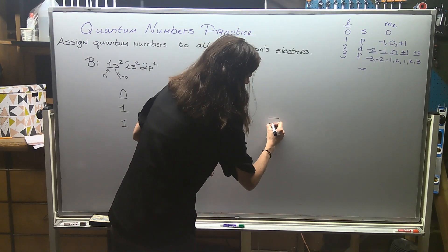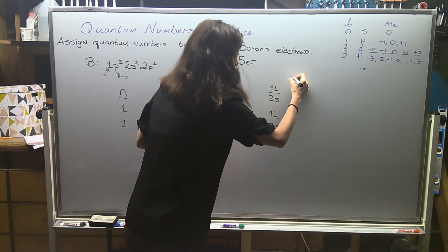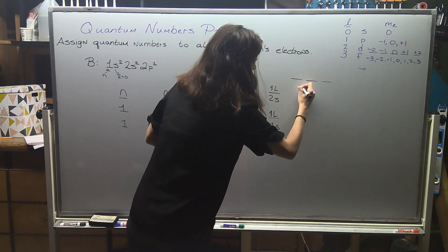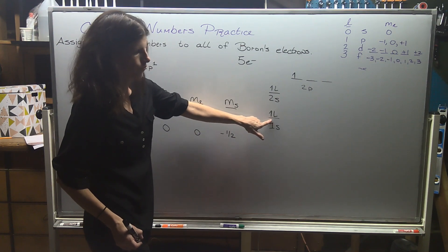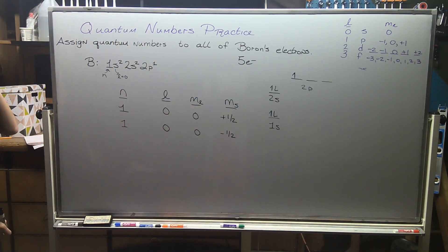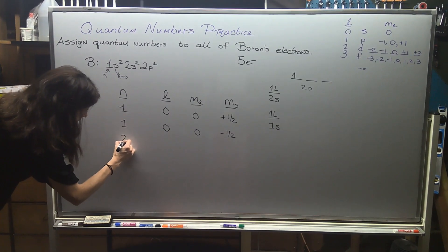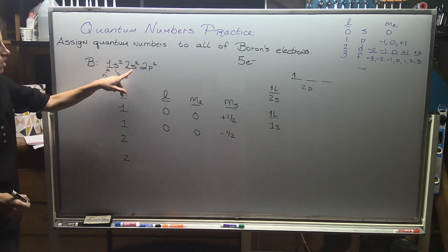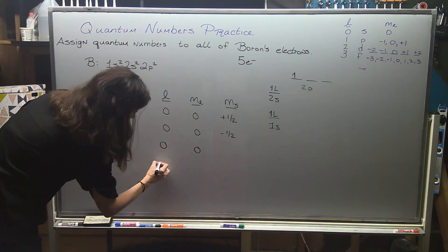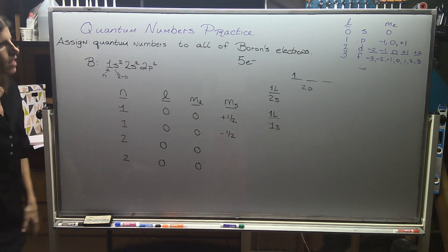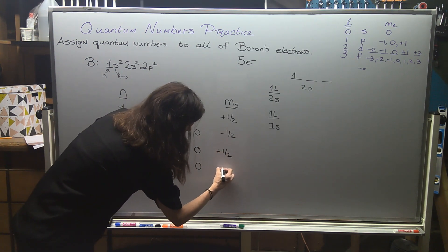What makes the two 1s electrons unique is their spin: one is spin up and one is spin down, so ms is plus one half and minus one half respectively. Now we're at n equals 2: that first number is our principal quantum number, so we have two entries with n equals 2. Two electrons are in the 2s orbital — the zeros for l and ml are the same, and we capture their spins as plus one half and minus one half.